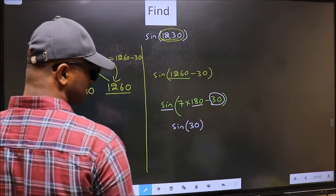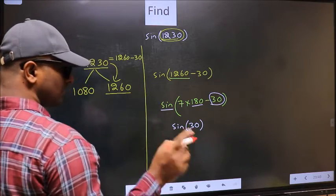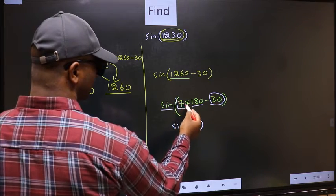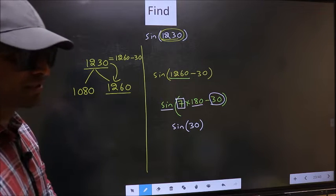Now the question is, will we get here plus or minus? To answer that, we should look at the number before 180. That is 7. And 7 is odd.